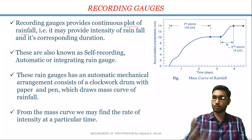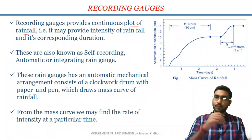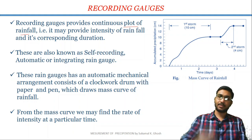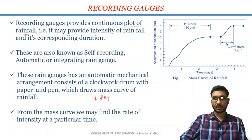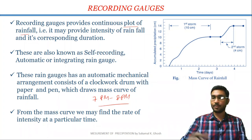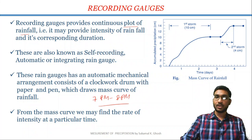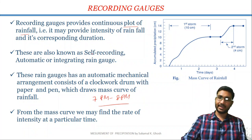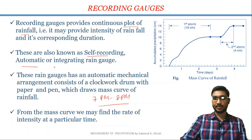Suppose you want to know the rainfall intensity in a day for a particular time — say from 7 PM to 8 PM. Then with the help of this recording gauge, you will be able to measure the rainfall data for a particular time in a day. This kind of recording gauges are also known as self-recording gauge, automatic recording gauge, or integrating rain gauges.